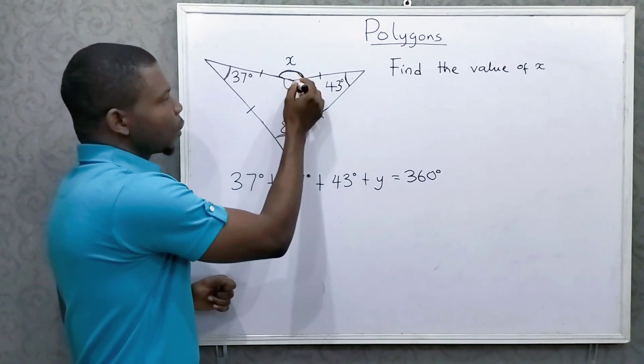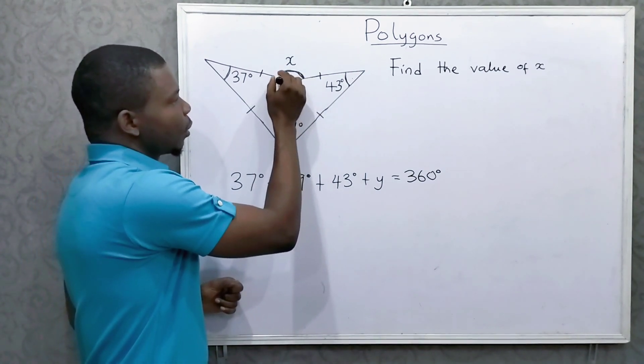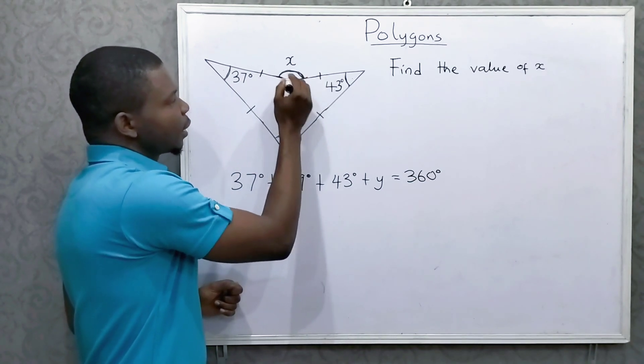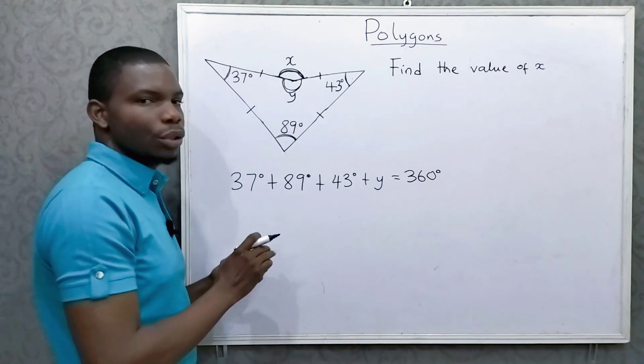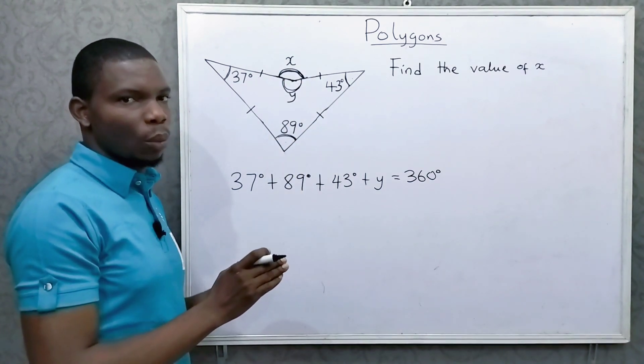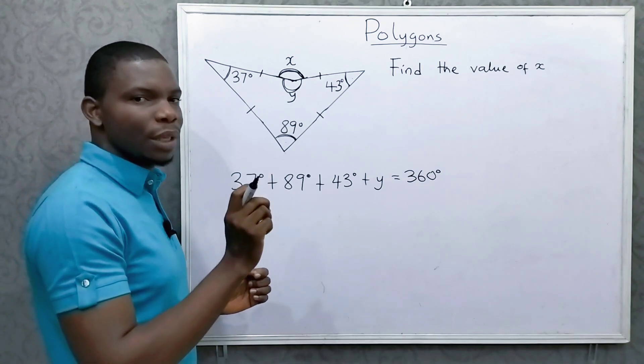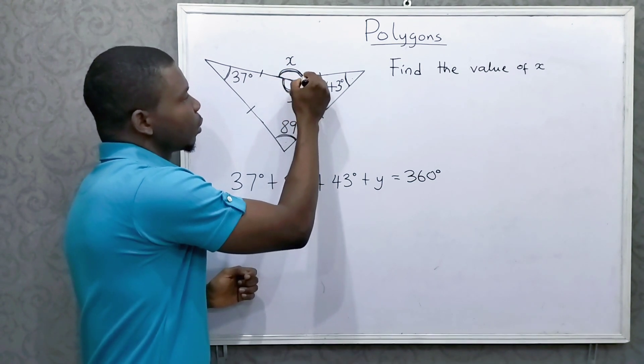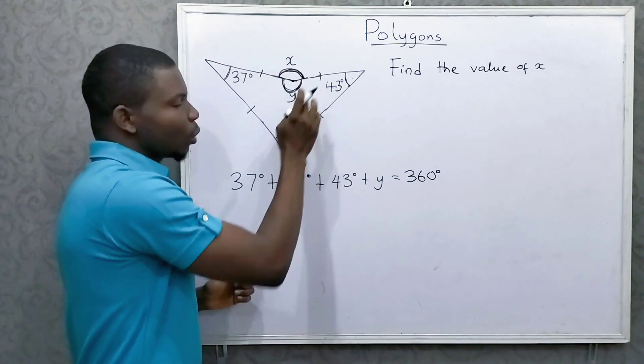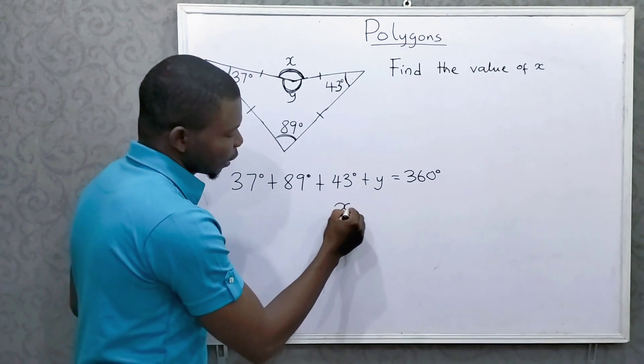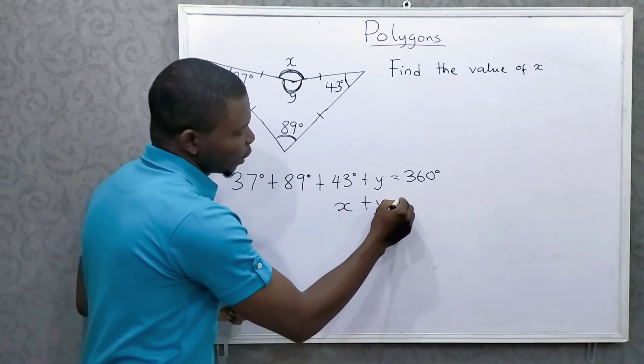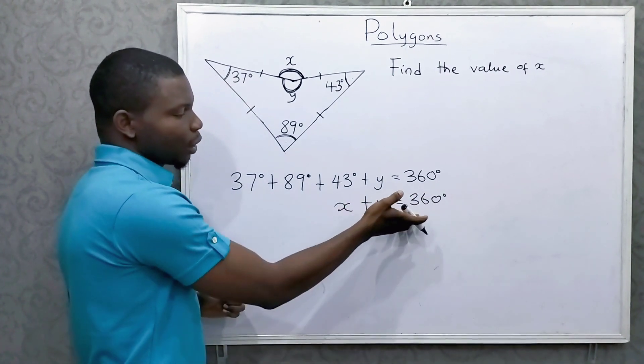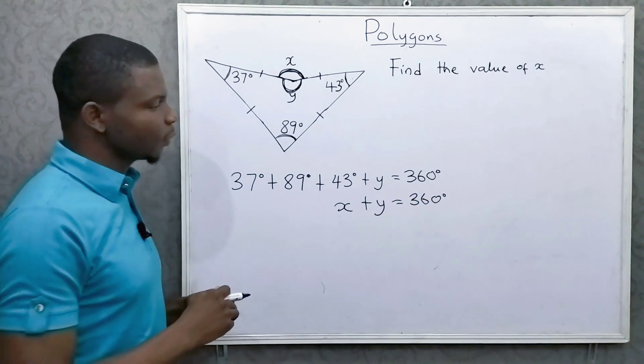Now, look at this point here. If you add y, this angle y, to this angle x, you should also get 360. Why? The sum of angles at a point is equal to 360. This is a point. This angle plus this angle equals 360. So we can say x plus y is equal to 360. And the reason is sum of angles at a point is equal to 360.